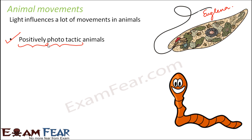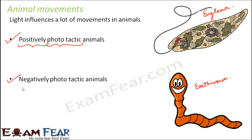Similarly, we also have negatively phototactic animals, and one such example is the earthworm. The earthworm always tends to move away from the light source — it always wants to move towards darkness. These are called negatively phototactic animals, and these movements are also influenced by light.